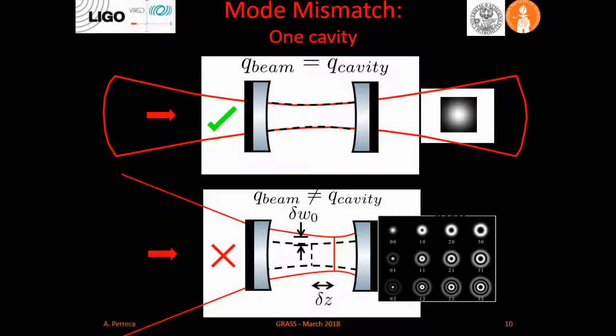The Q of the cavity is shown as a dashed line here — that is a Gaussian profile — and those are two different examples. Here we have a mismatch, and here we have a perfectly mode-matched light. So we introduce light exactly as the cavity requires. That's the principle. With one cavity, it's a simple problem.